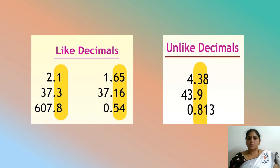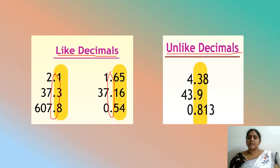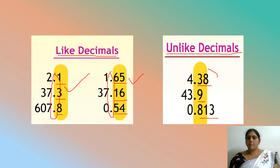You can observe these two images to find the difference between like and unlike decimals. For like decimals, after the decimal point all numbers have only a single digit, or all have 2 digits — the count is equal. For unlike decimals, after the decimal point you have 2 digits in one, a single digit in another, and 3 digits in another, so the number of digits after the decimal points are not equal. That is why we call them unlike decimals.